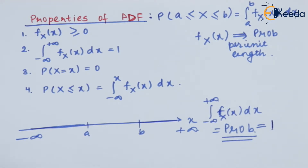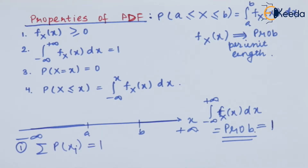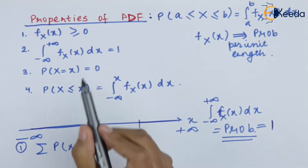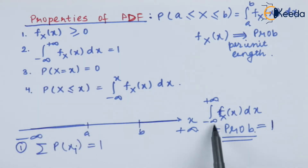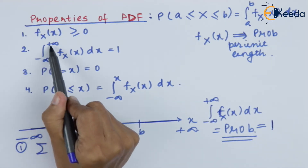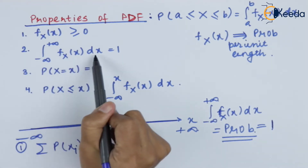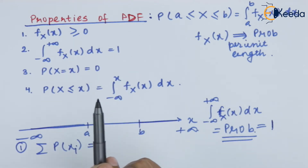We can recall the properties of probability — that the summation of all cases of probability is always equal to 1. Hence, the area lying under the curve from minus infinity to plus infinity, that is the integral of f(x) dx, is always equal to 1.